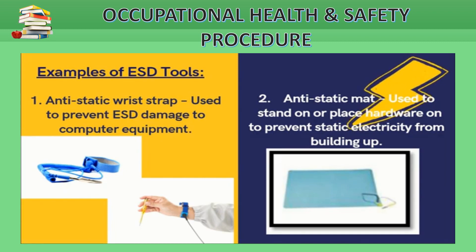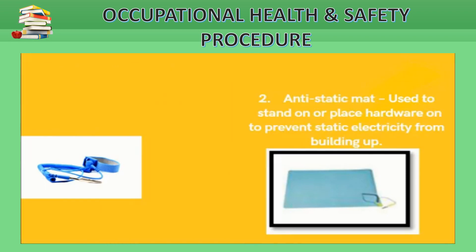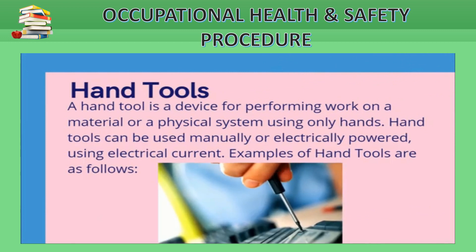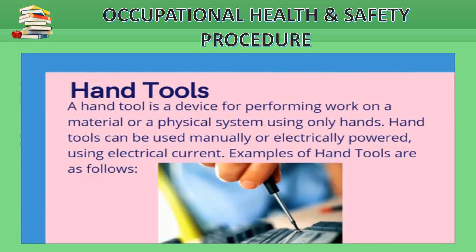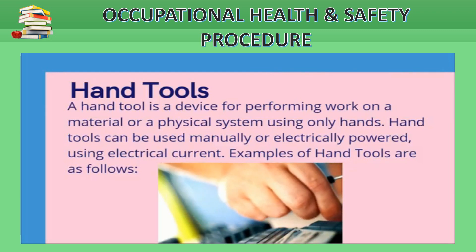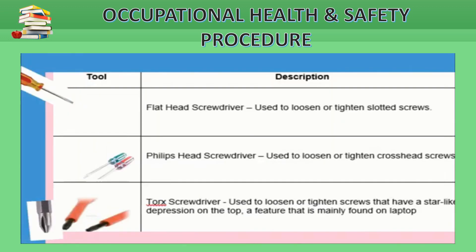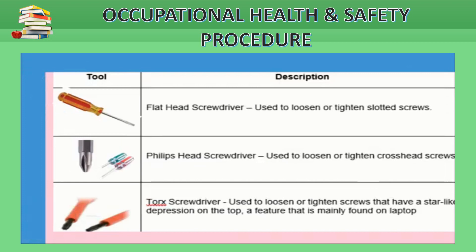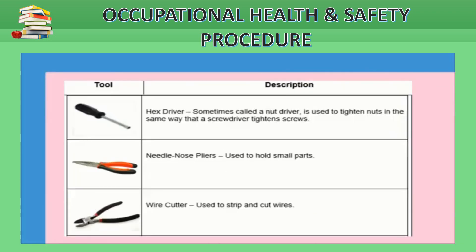Hand tools: a hand tool is a device for performing work on a material or physical system using only the hands, and can be used manually or electrically powered. Examples include: flat-head screwdriver — used to loosen or tighten slotted screws; Phillips-head screwdriver — used to loosen or tighten cross-head screws; Torx screwdriver — used to loosen or tighten screws with a star-like pattern, mainly found on laptops; hex driver (also called nut driver) — used to tighten nuts; needle-nose pliers — used to hold small parts; wire cutter — used to strip and cut wires.